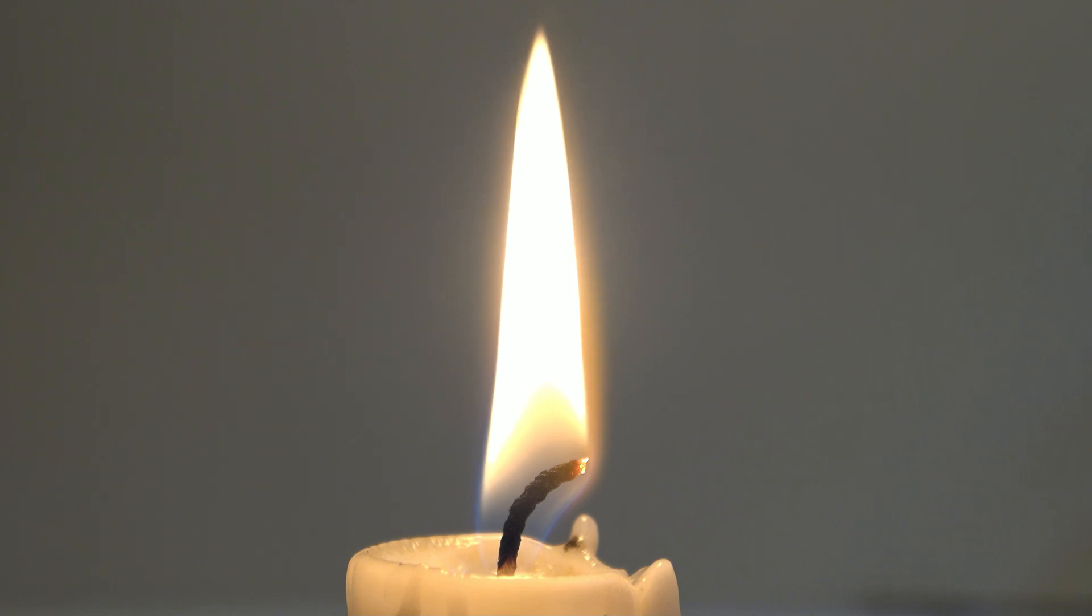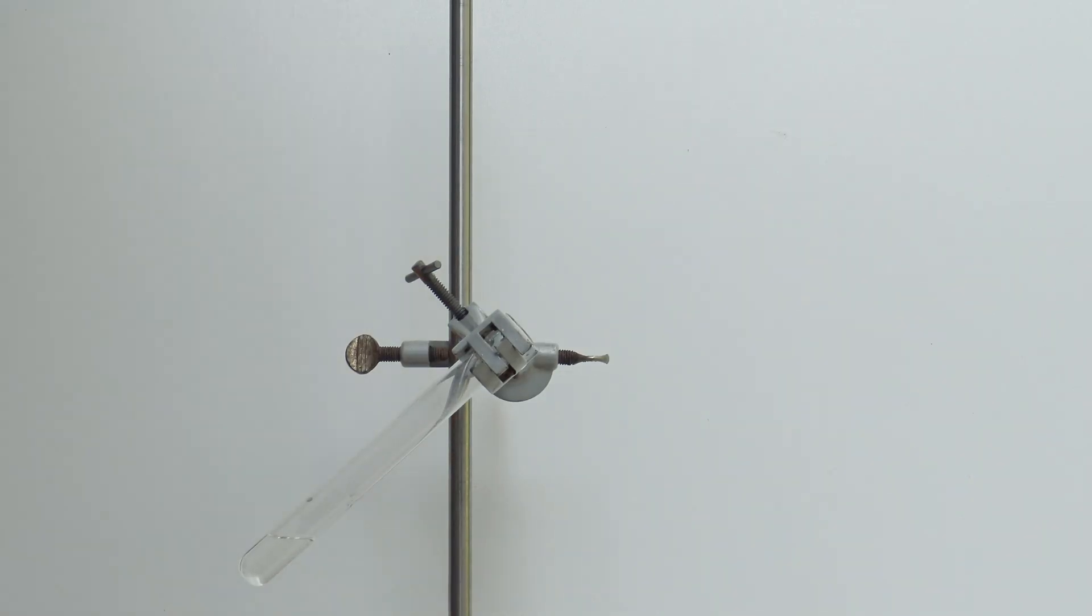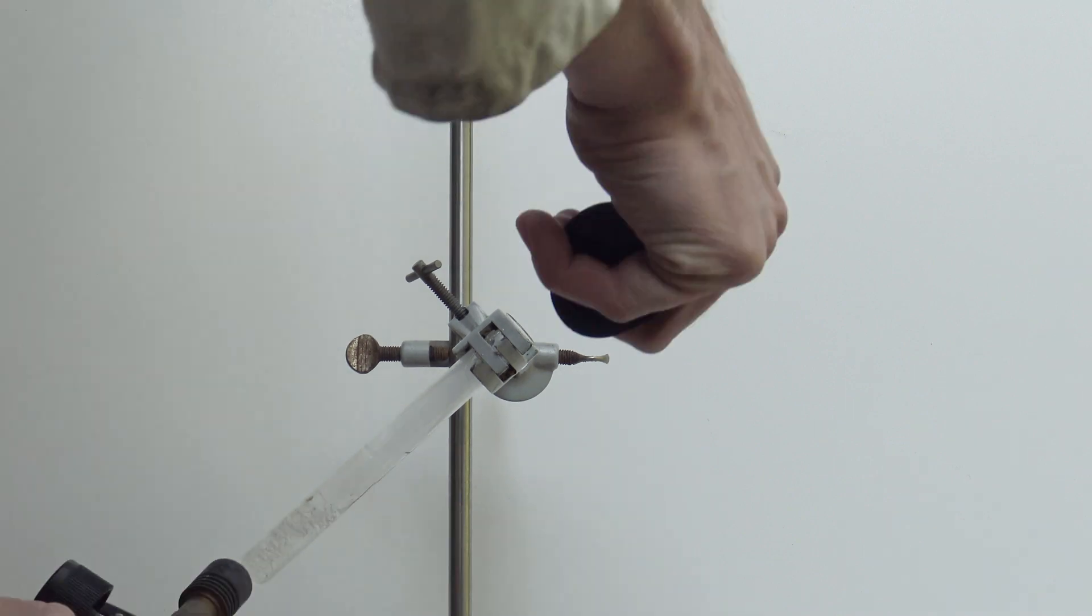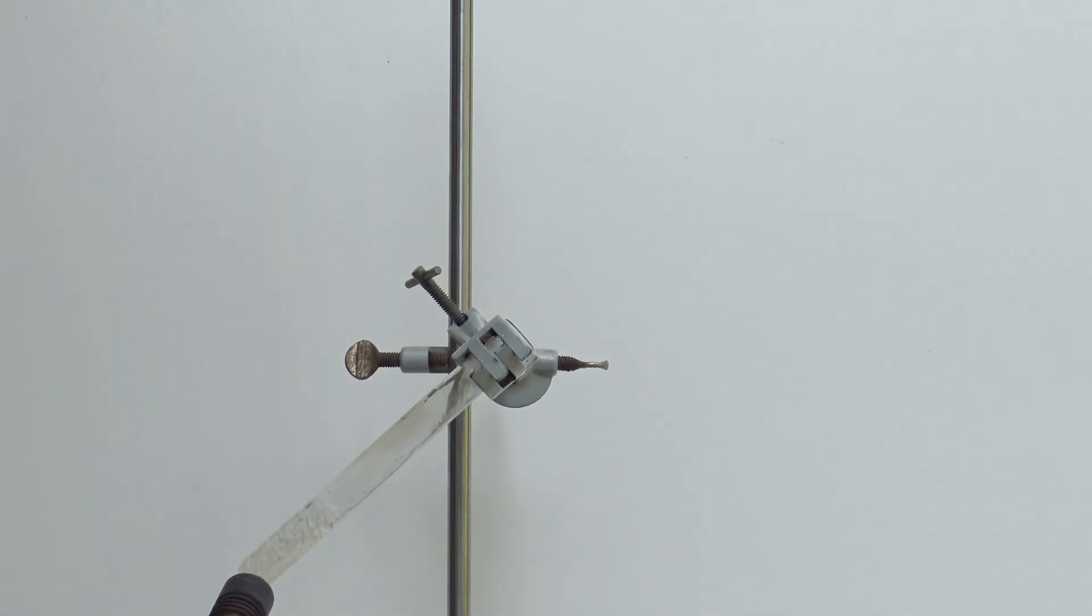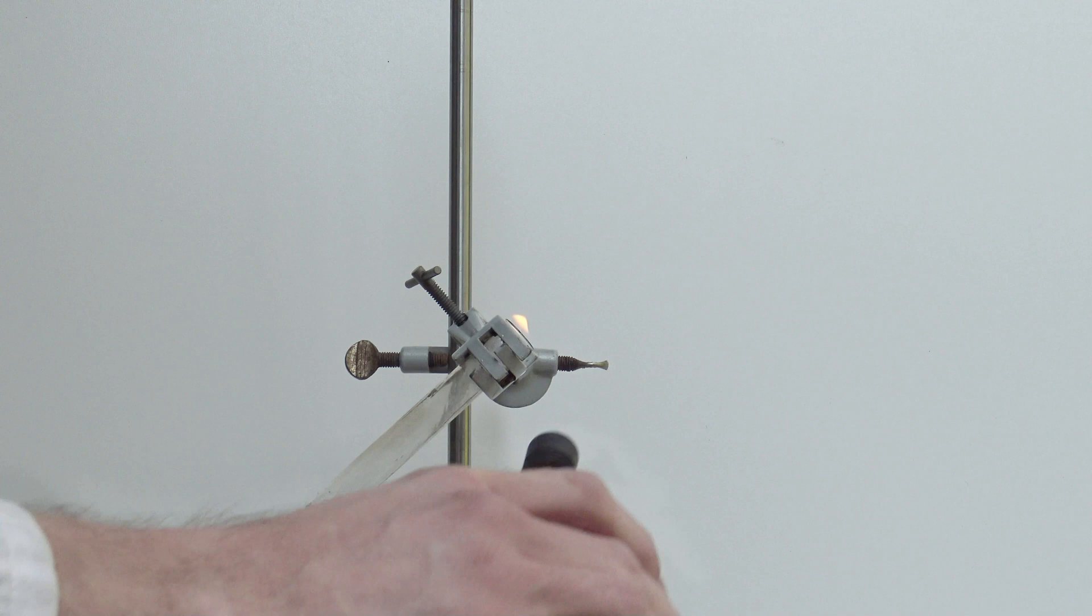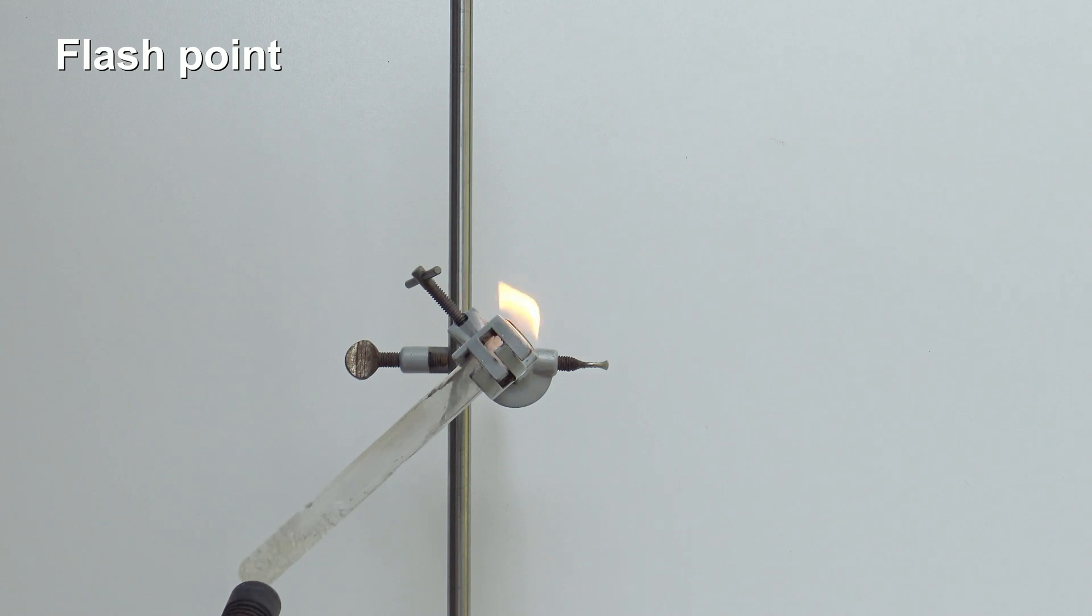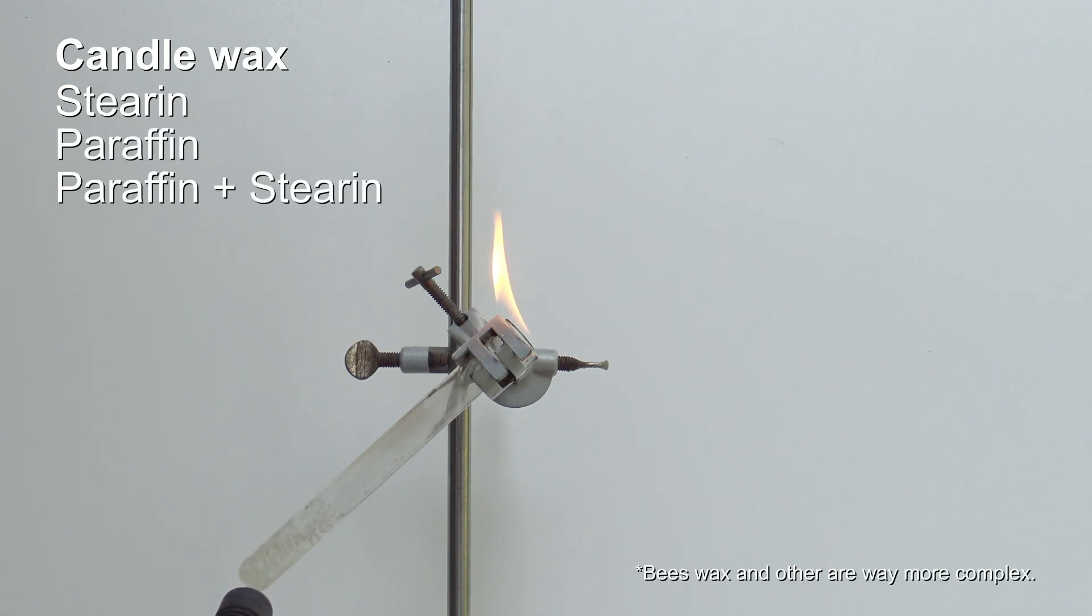Wax itself is hard to ignite. Nevertheless, when it is heated until it evaporates, the vapor can be ignited as in the wick of the candle. The temperature at which a compound can be ignited in air is called the flashpoint. The flashpoint of wax is roughly between 200 and 250 degrees Celsius. The precise temperature depends on the composition of the wax, because candles are often made of stearin, paraffin, or even a mixture of both.